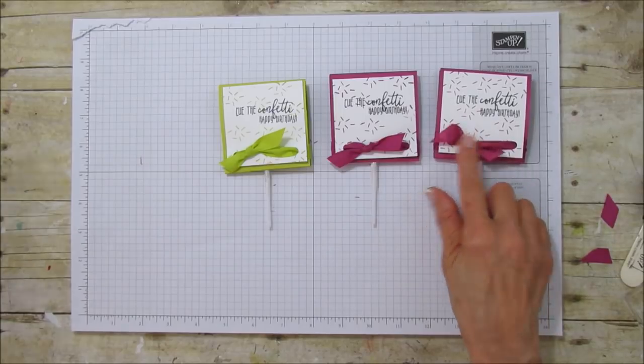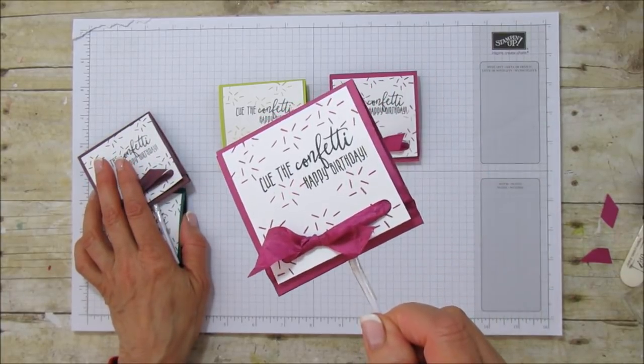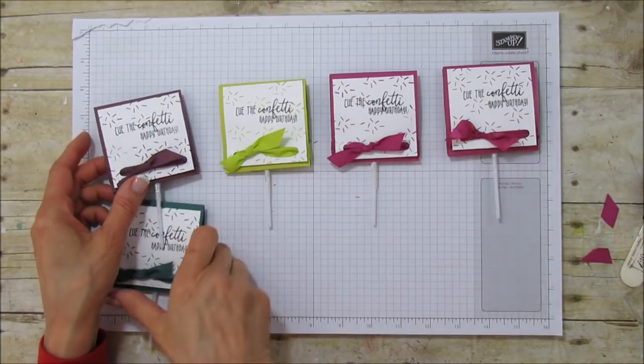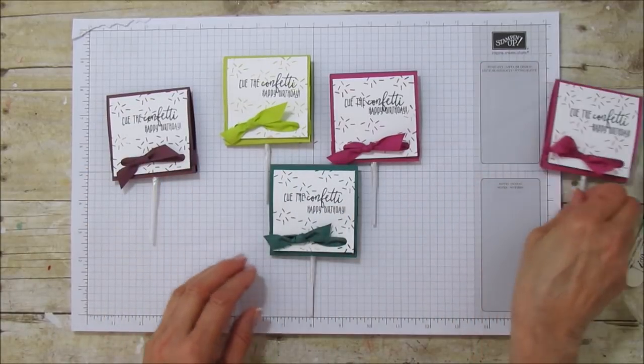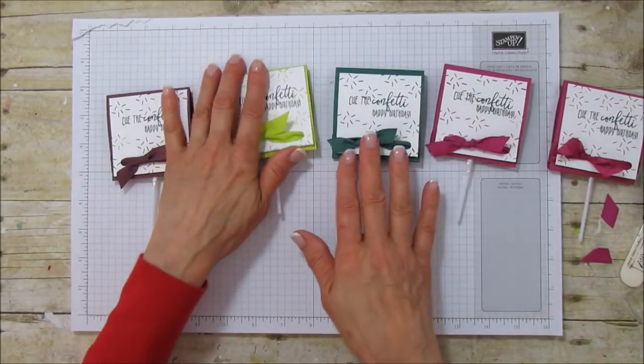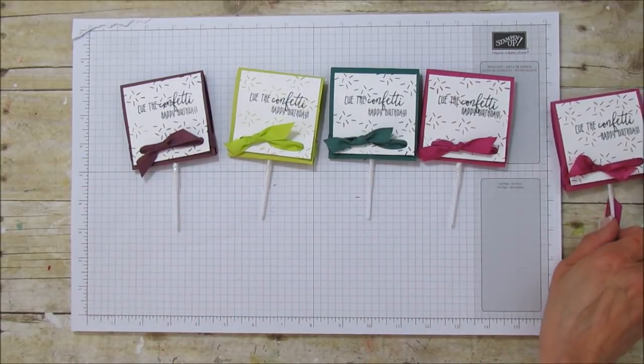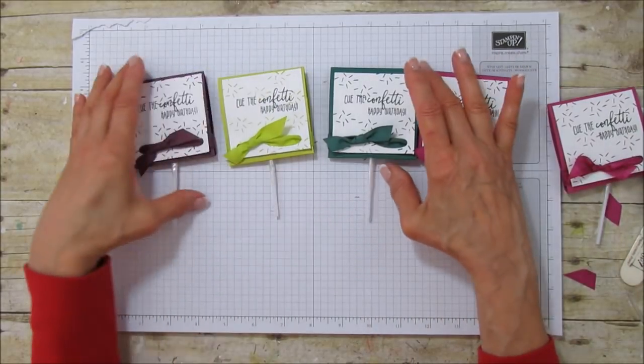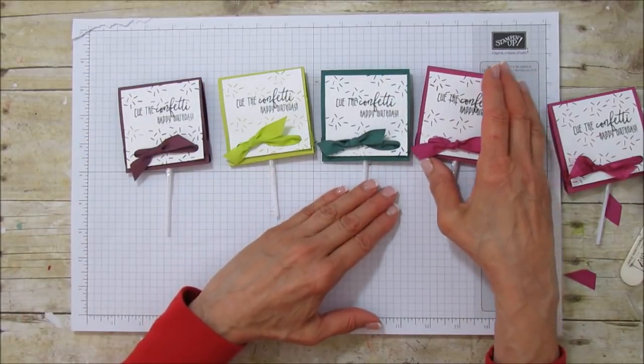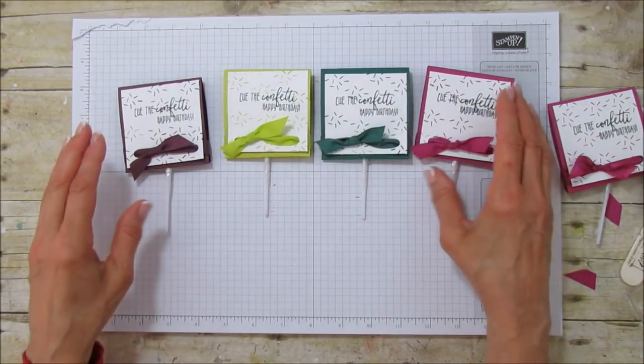And this one like I said I used the crinkle ribbon, you can see the difference on there. So if you have the crinkle you can use that but I really like them all coordinating with the same ribbon. I think they're super cute. So that's it everyone, it's a quick and easy way to present a really simple little party favor.